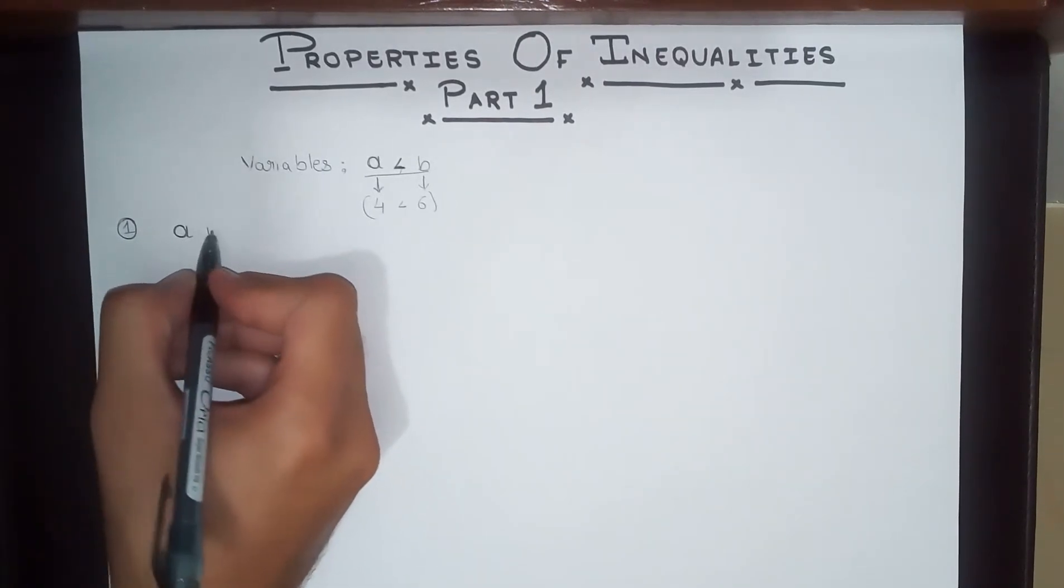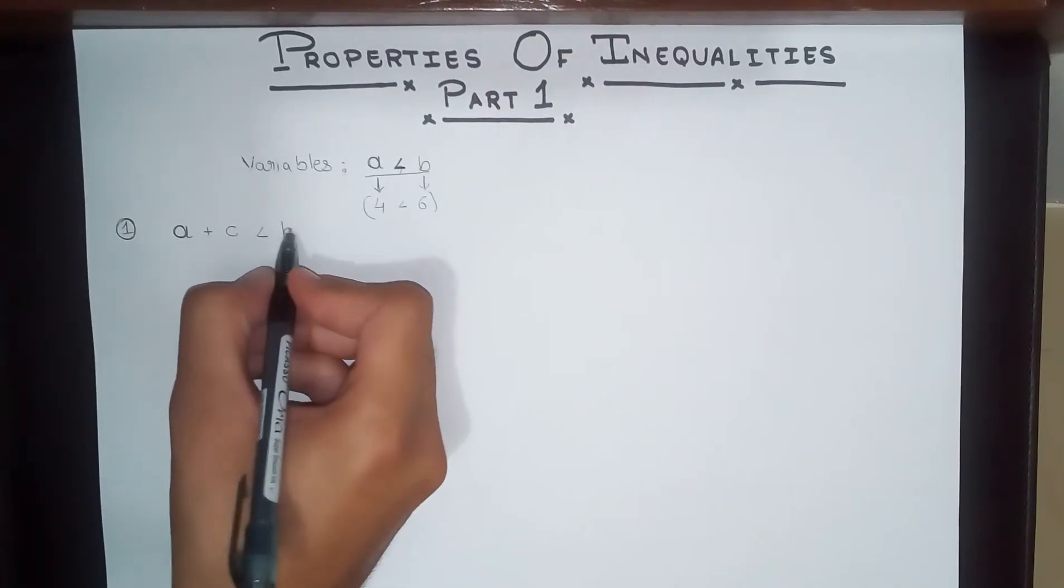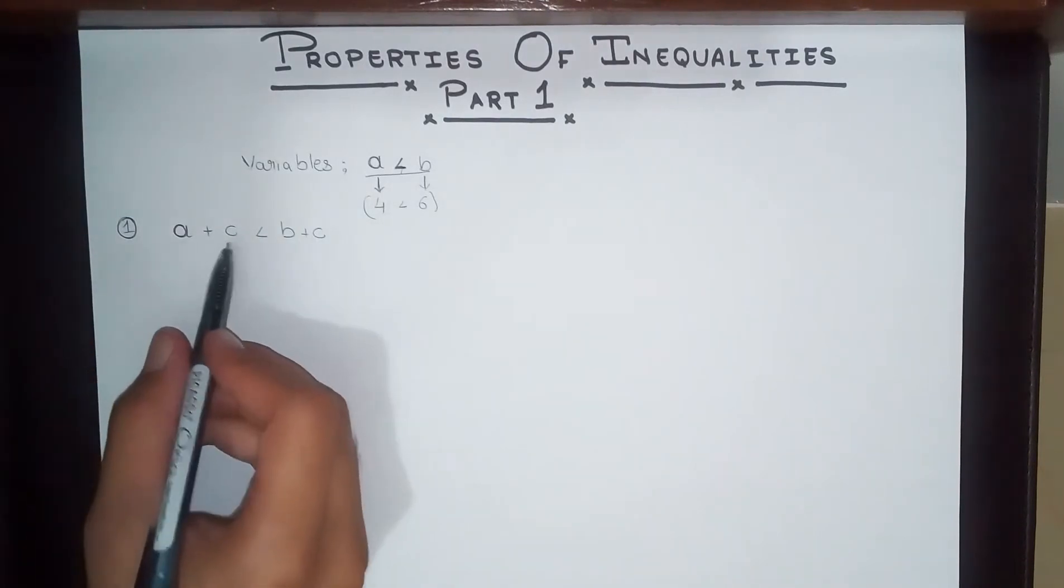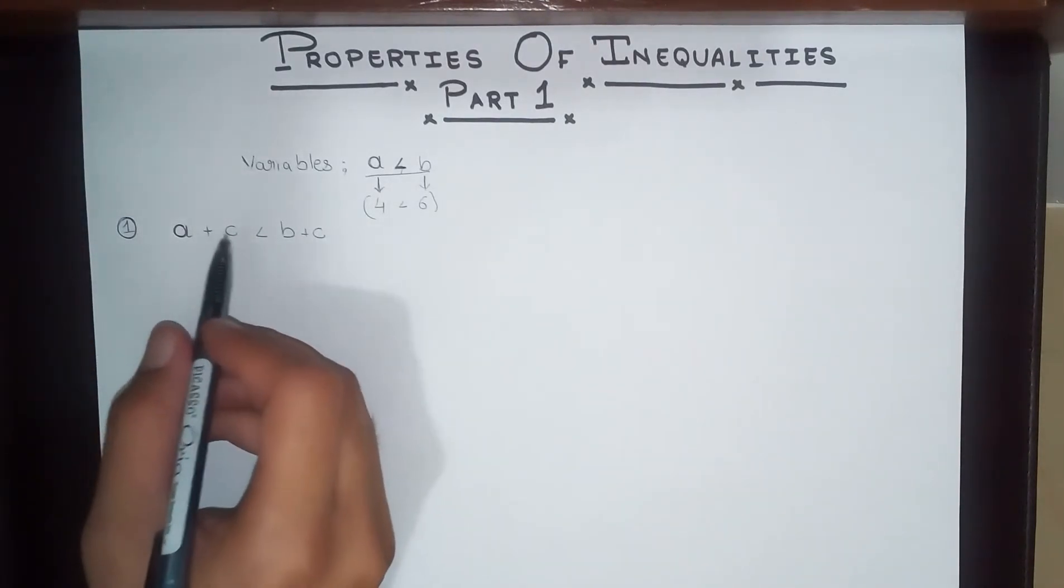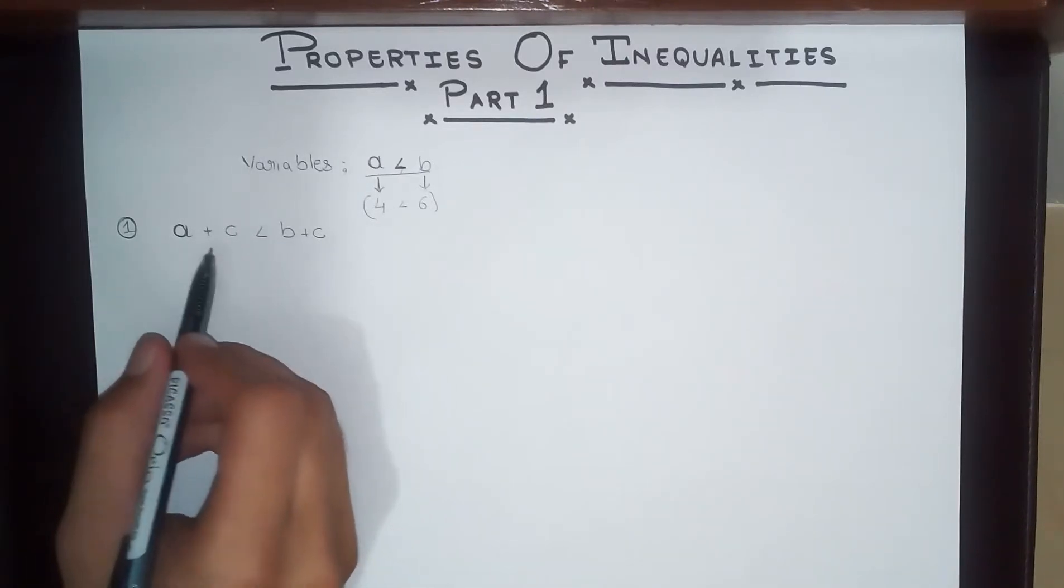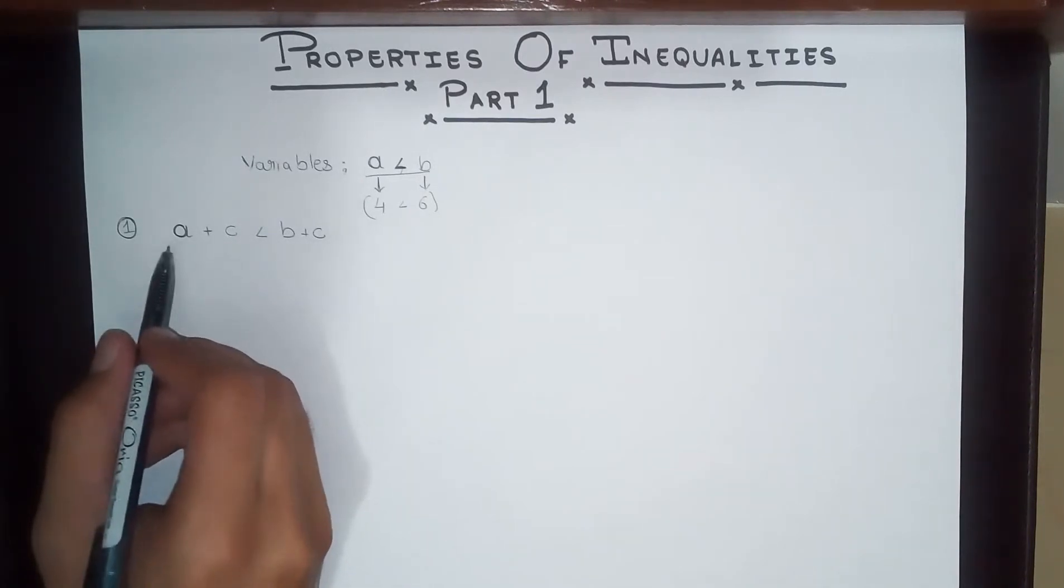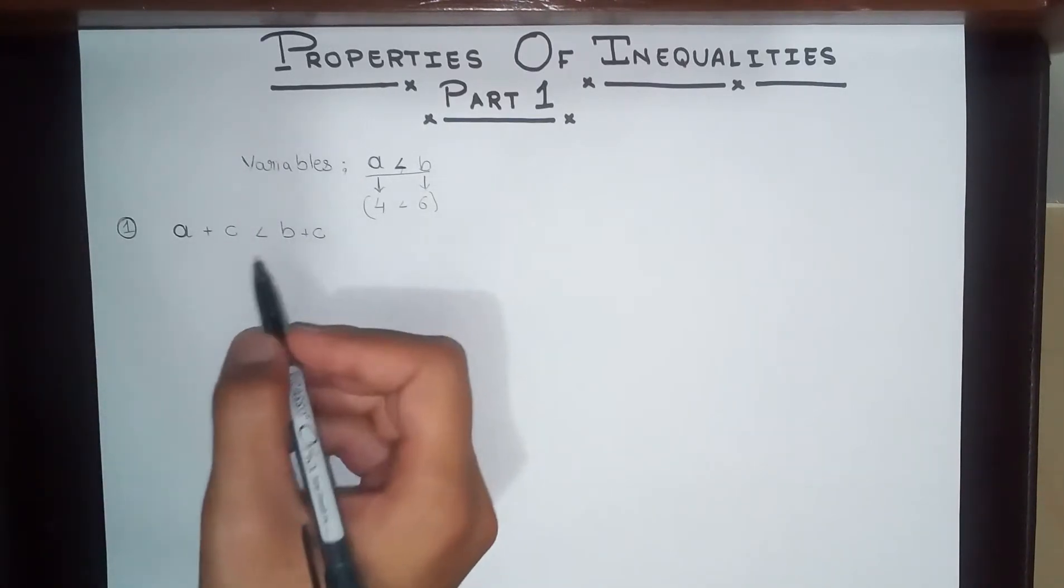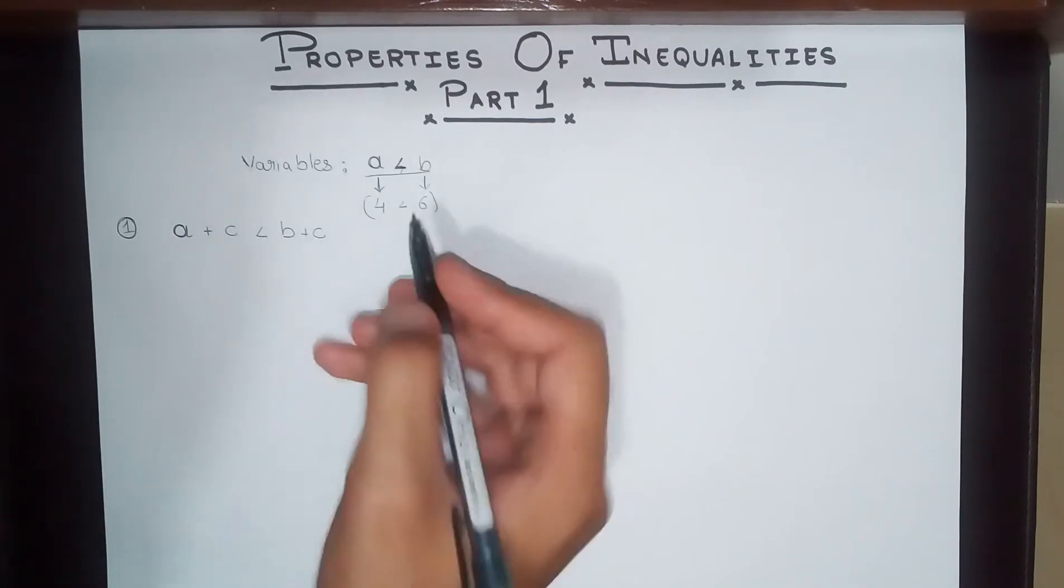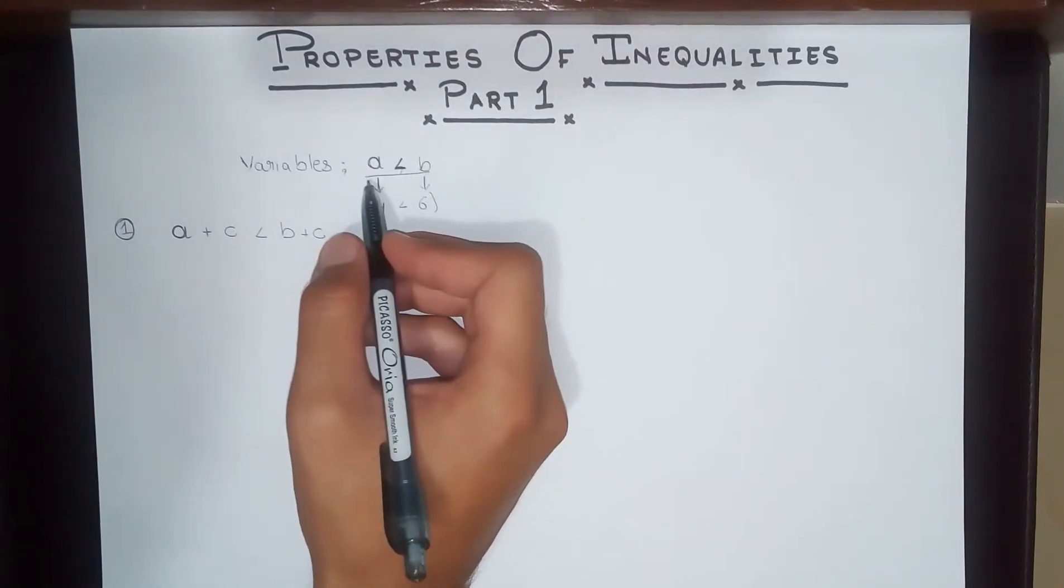The first property says that A added with C is less than B added to C. What exactly is C? C is a constant number. We are adding a constant number to both sides, and before we added C, we said that B is greater than A.